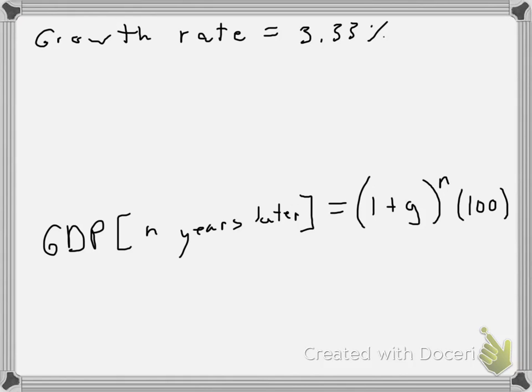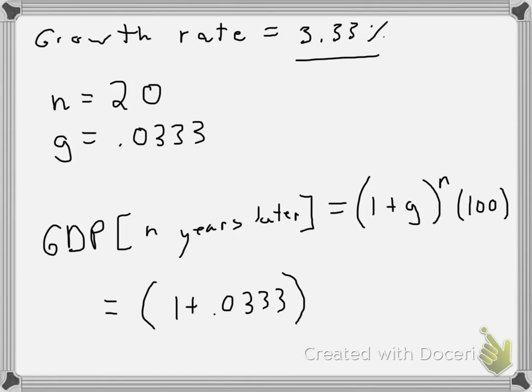Let's say we wanted to see what our economy would look like at a growth rate of 3.33% in 20 years. So n would equal 20 and our G would equal 0.0333. What we would do is sub in these things, so we'd have 1 plus 0.0333 to the 20th power, times 100.